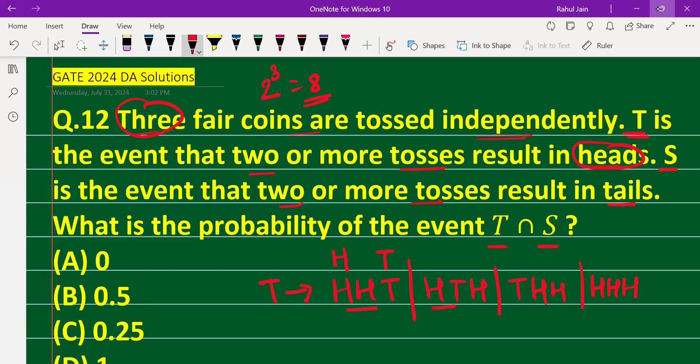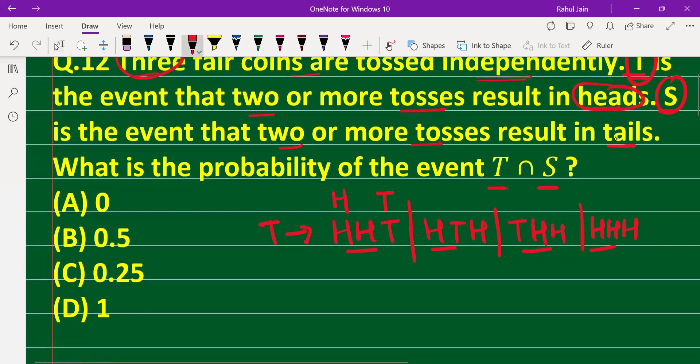Similarly, S is the event that two or more tosses result in tails. So it could be tail-tail-head, tail-head-tail, head-tail-tail, or tail-tail-tail.